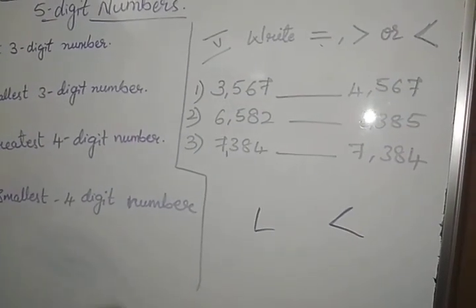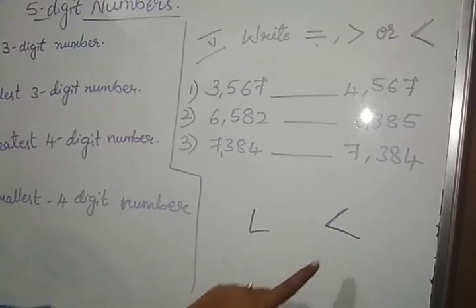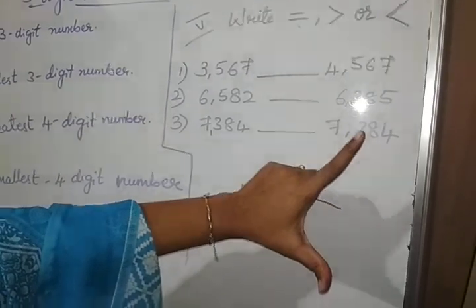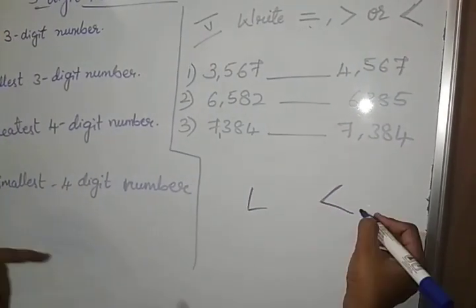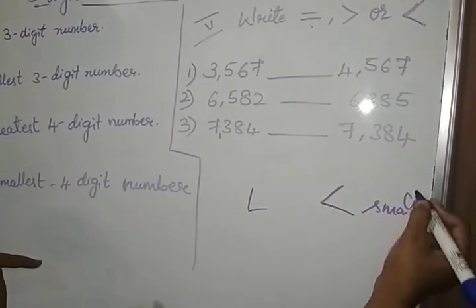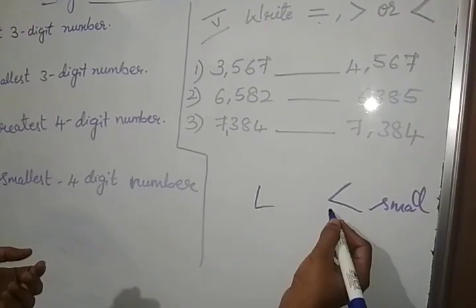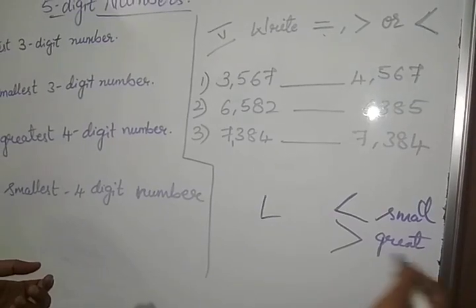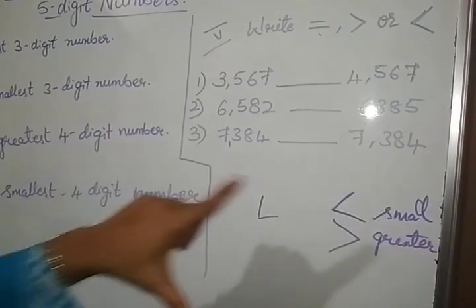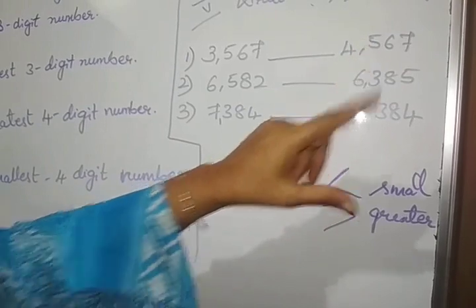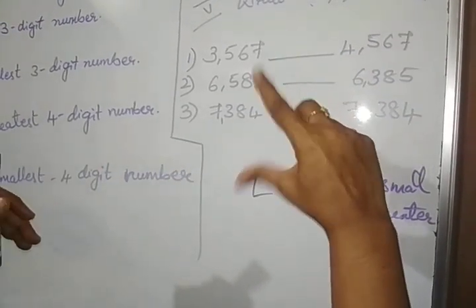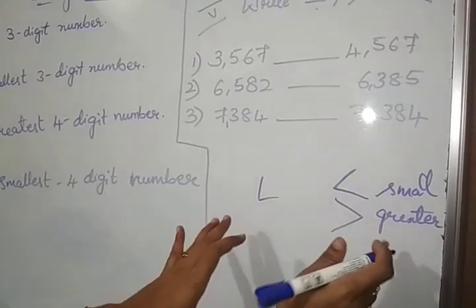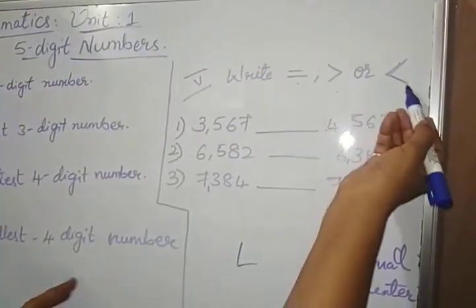If it is like alphabet L, if it is like L shape, it is like this side, that is called as small. If it is opposite to this, greater. Left hand, smaller, right hand, greater. This is a small hint for you to remember greater sign and the smaller sign.